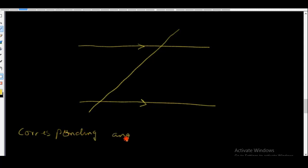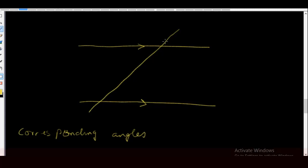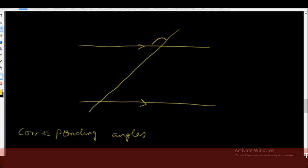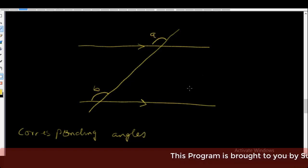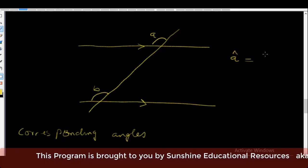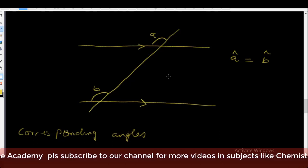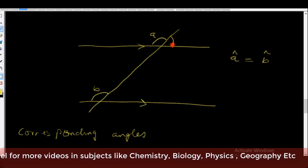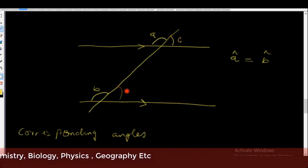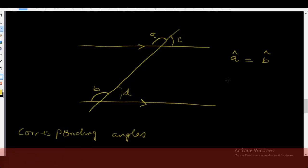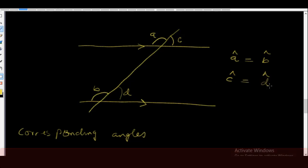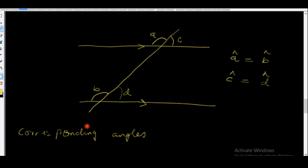We're now going to point out corresponding angles. Let's pay attention to this angle here and this angle here — let's call this angle A and this one angle B. Angle A is equal to angle B, and these angles are called corresponding angles. Similarly, let's call this angle C and this one angle D. Angle C is equal to angle D, and these are also called corresponding angles.